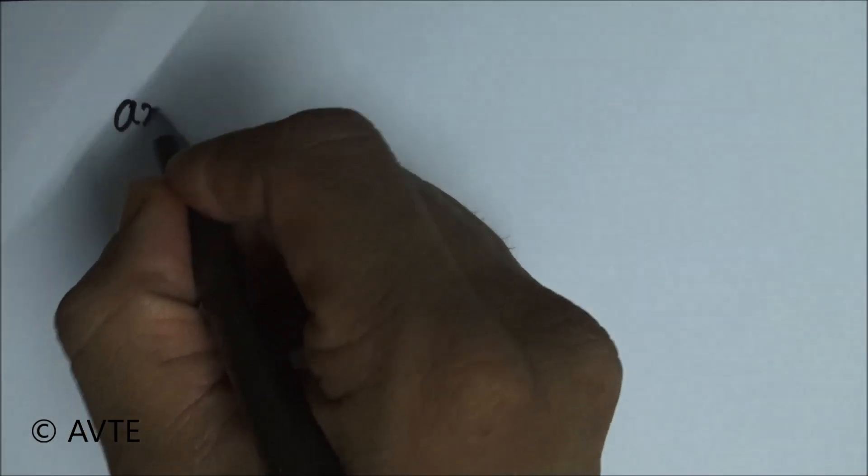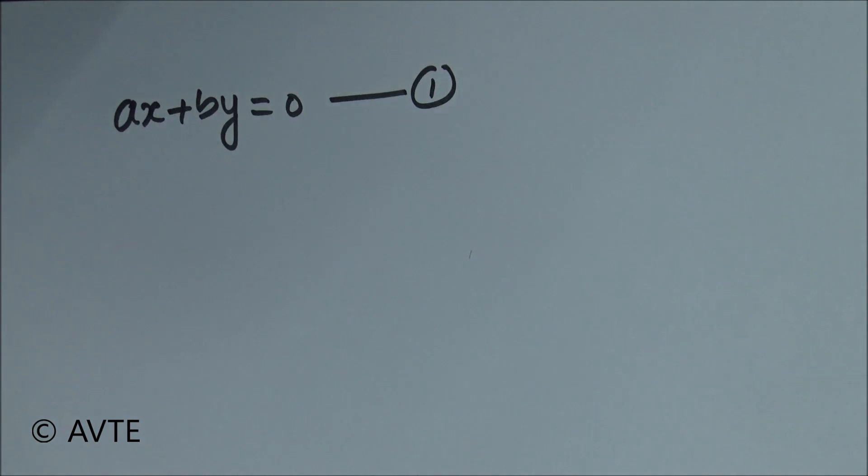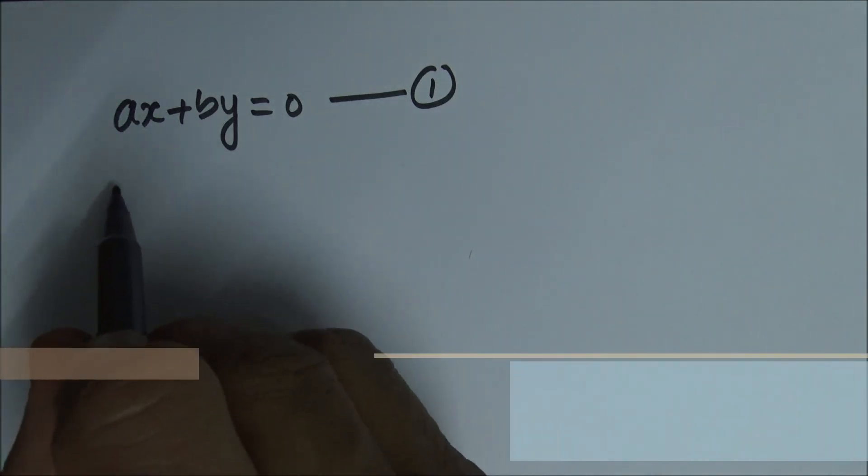So one plane is AX plus BY is equal to 0, and the line of intersection is